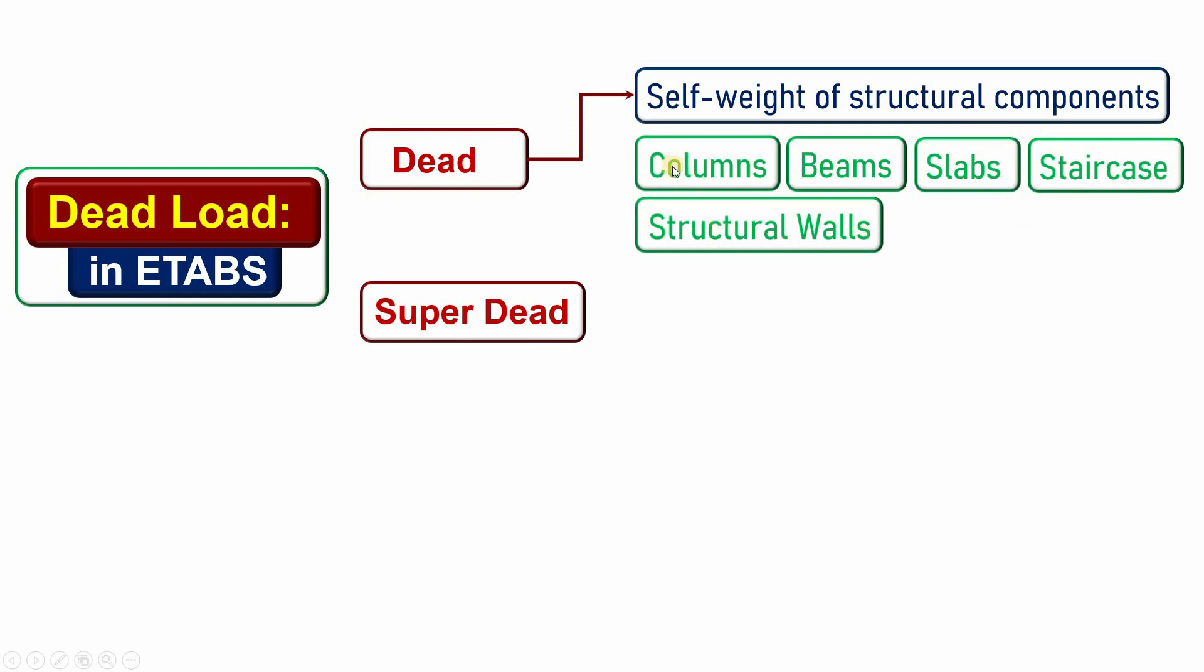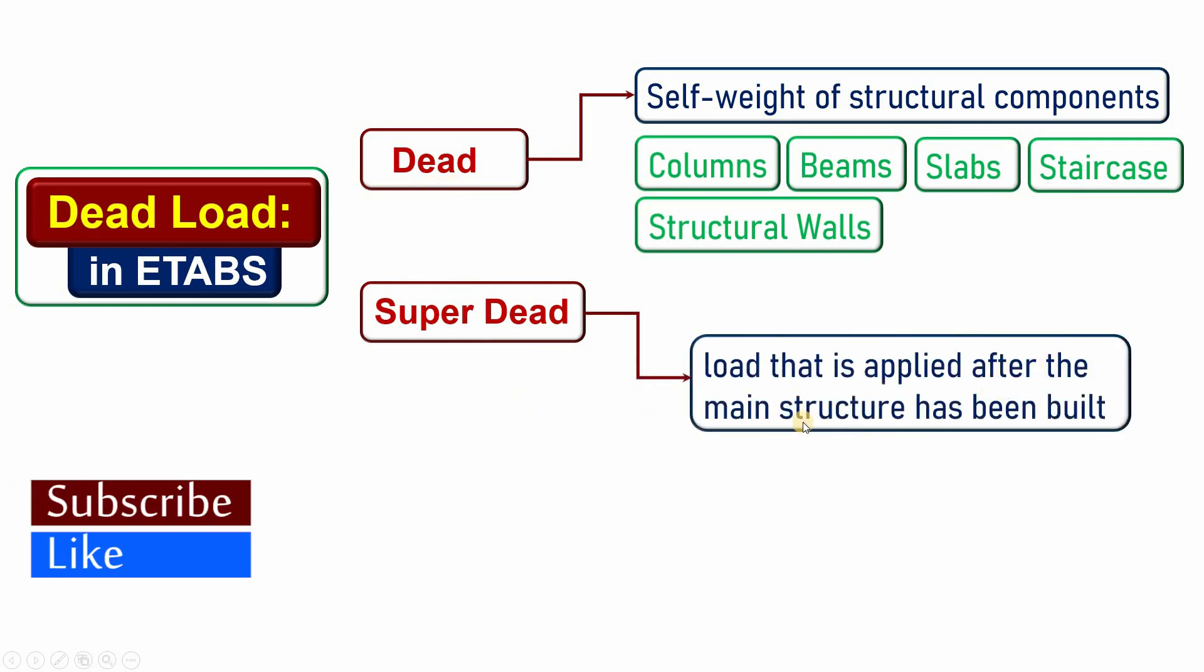Their self-weight are defined in ETABS as dead. That's one. The super dead are those loads that will be applied after the main structural members are constructed and casted and finished. So after all this is completed, it means after the column and beams, walls, staircase, slabs are all casted, those other dead loads that will be applied...